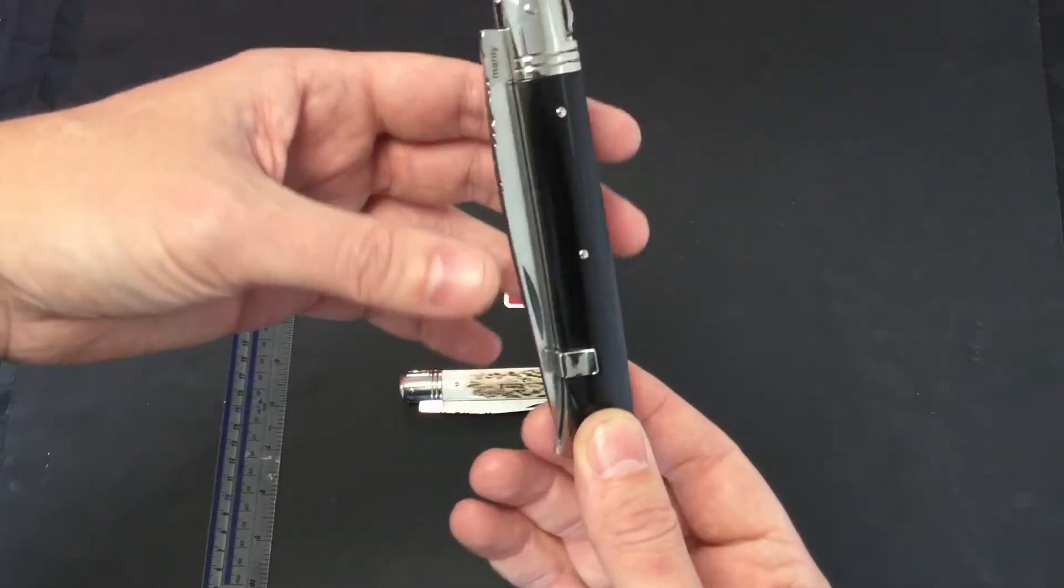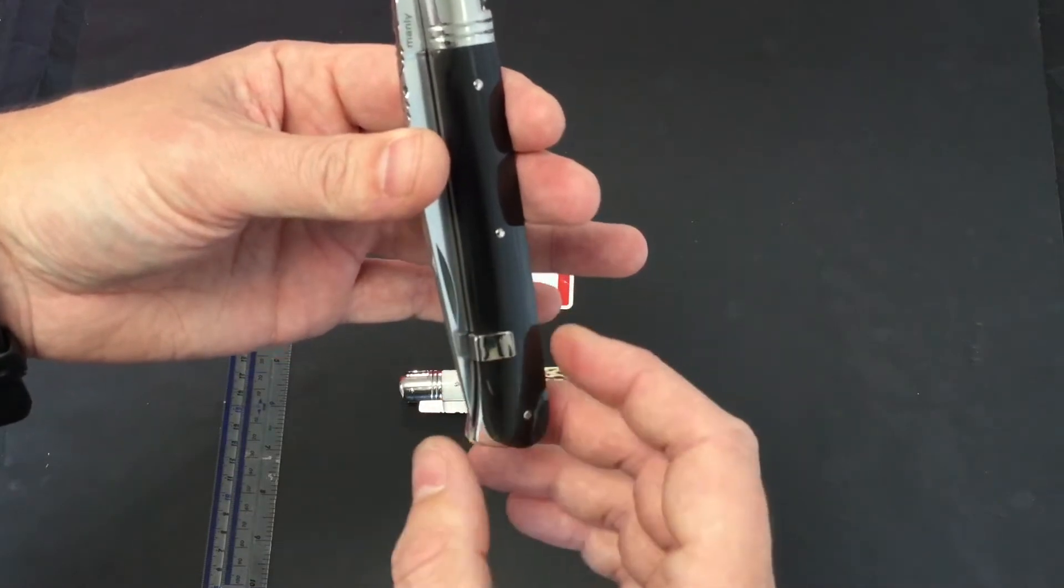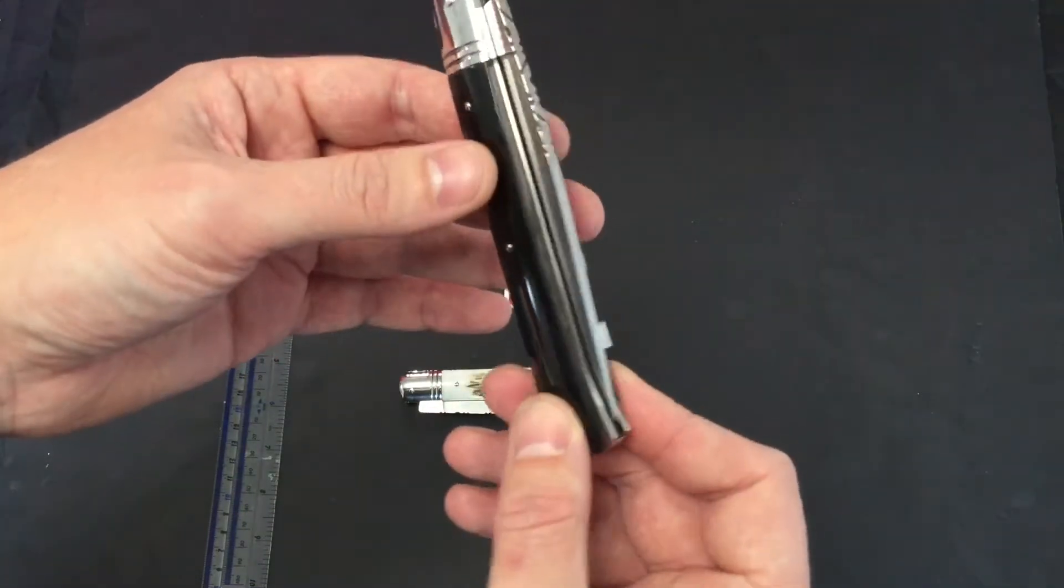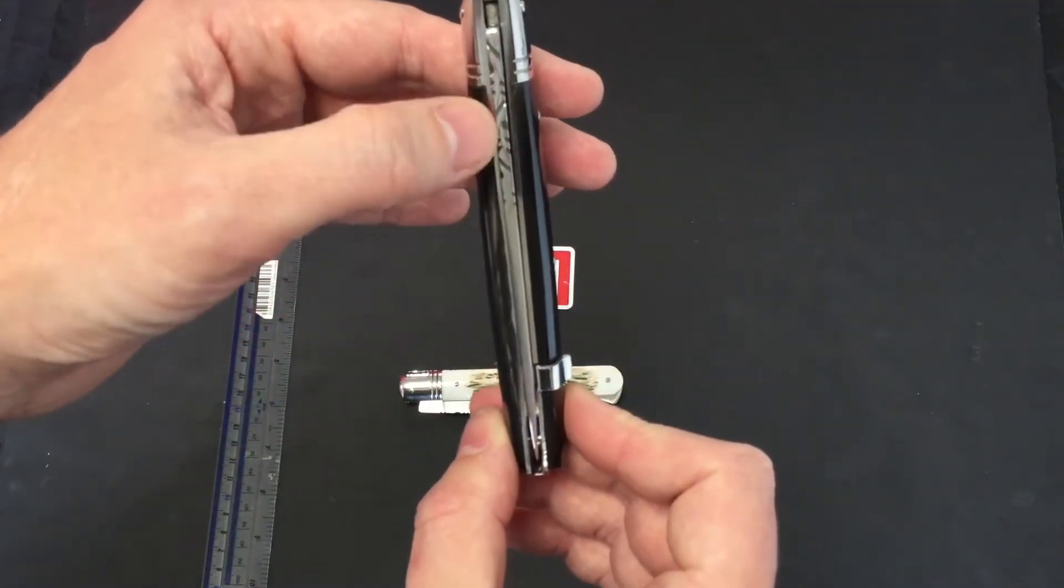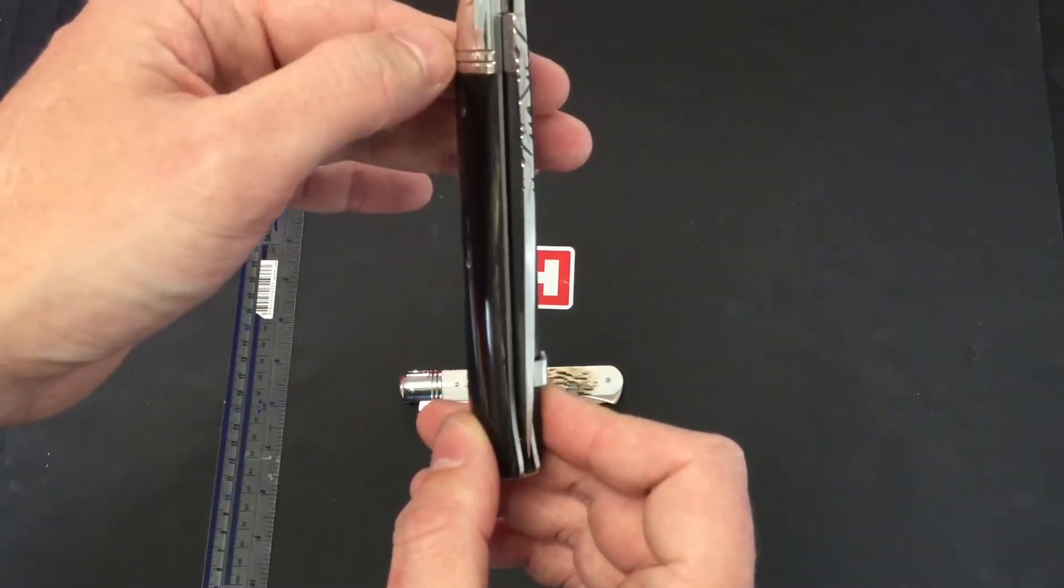Stainless bolsters and pins. We'll come to that in a minute. That's the clever locking mechanism, and we've got file work on the back spine as well.